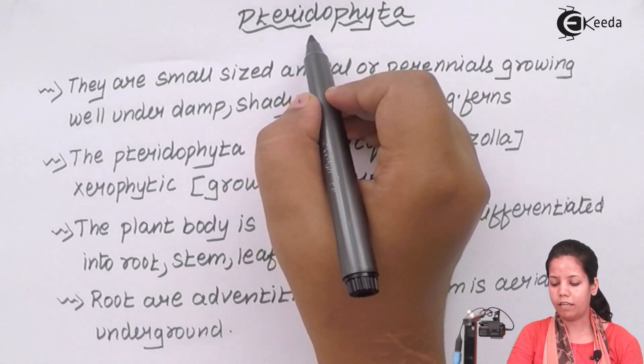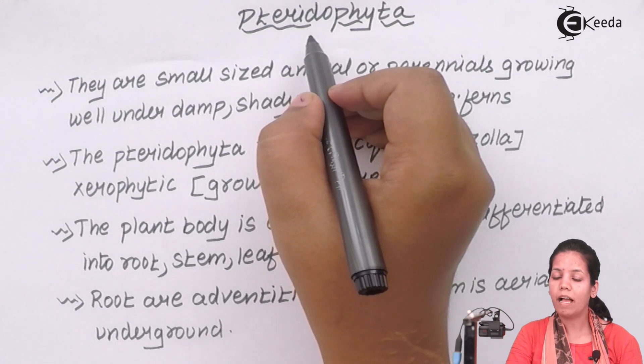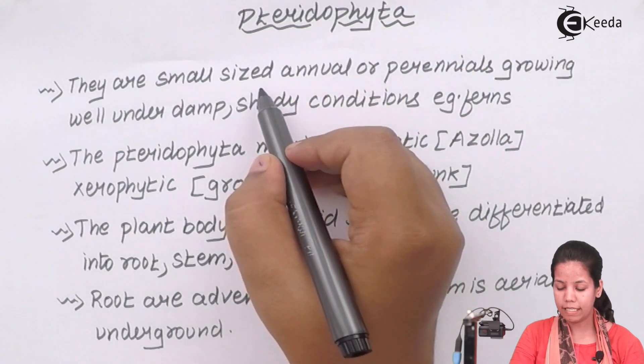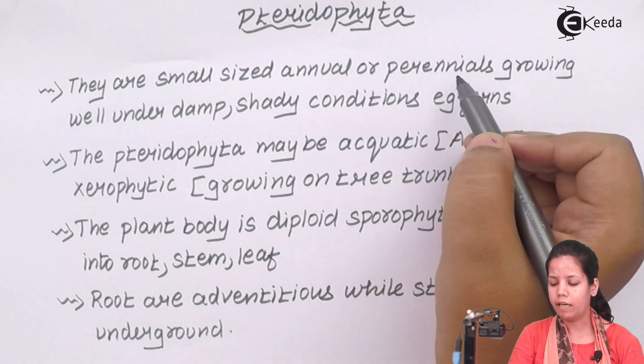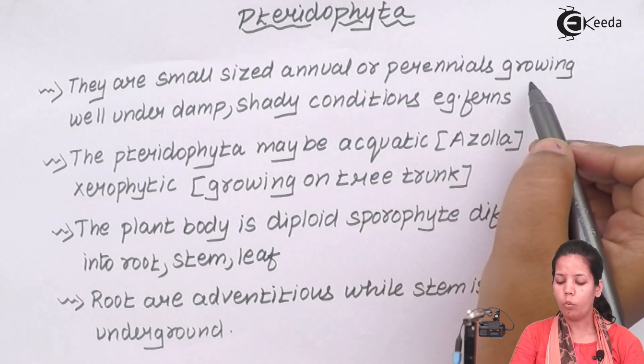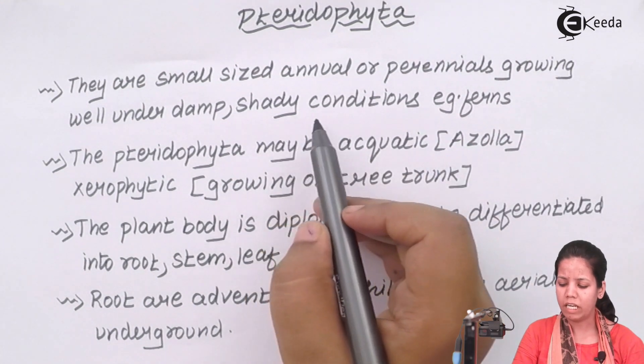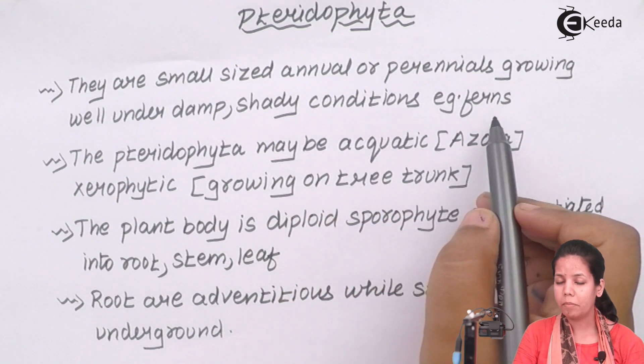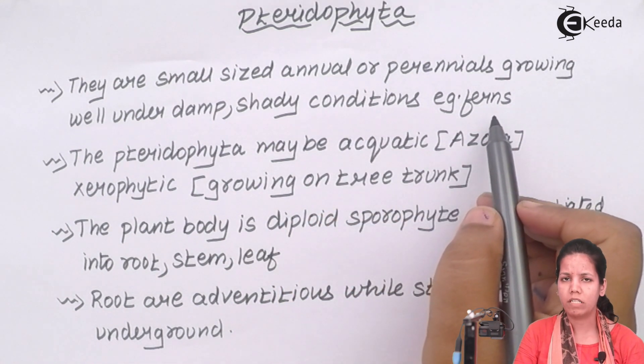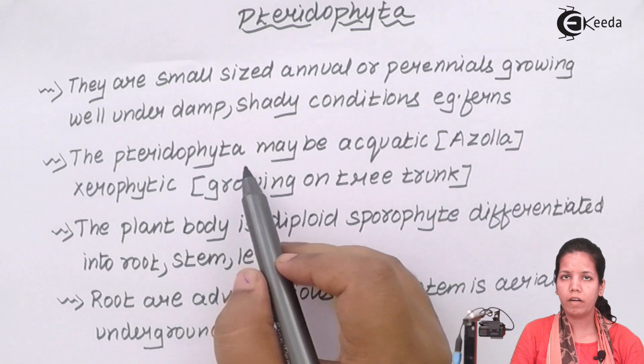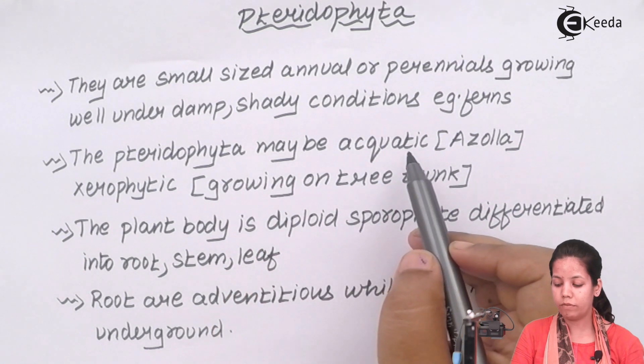Pteridophytes are basically small-sized annual or they could be perennial plants that grow well under damp, shady conditions. One example is ferns which all of us must have seen. Now pteridophytes, sometimes they are water living which is aquatic.